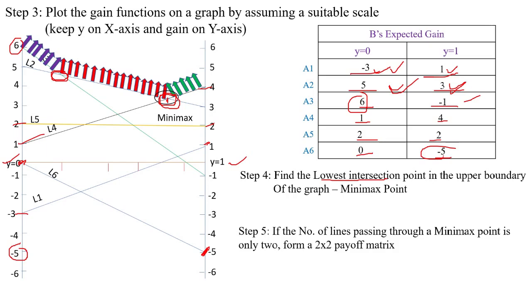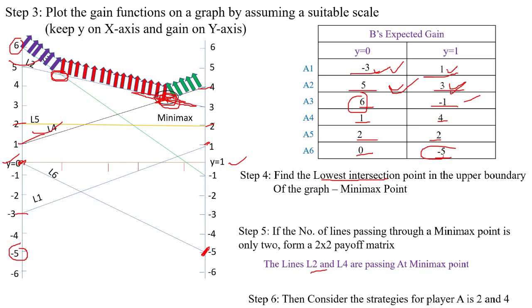At the minimax point, two lines are passing: L2 and L4. Therefore, we consider player A's strategies 2 and 4 as the active strategies.